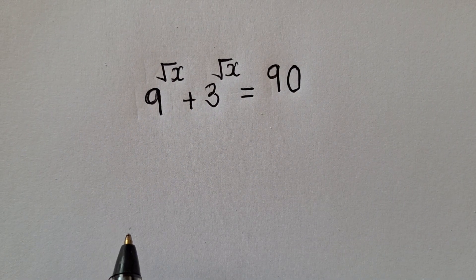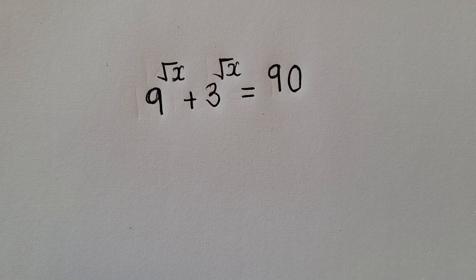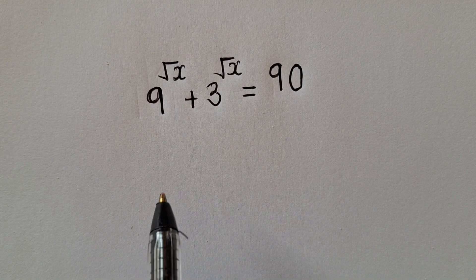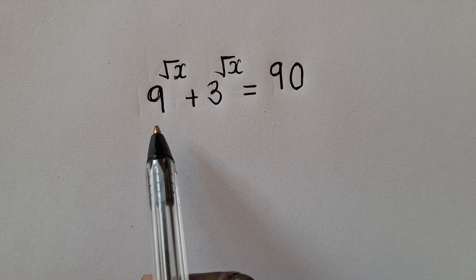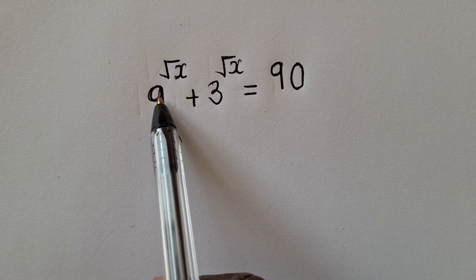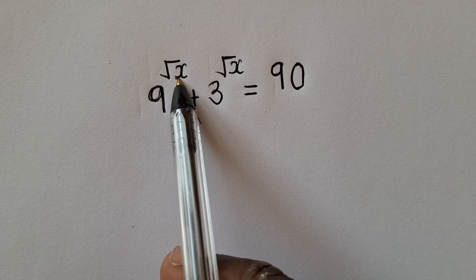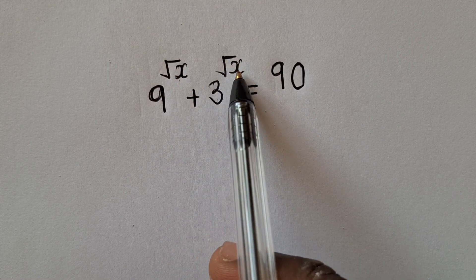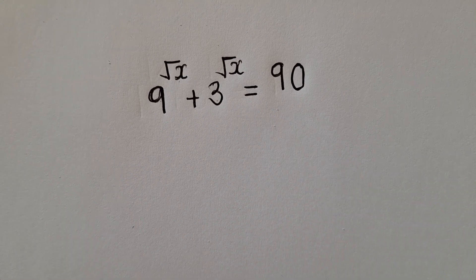Alright, so I've got a question sent to me by one of my subscribers. The question reads: solve for x. 9 power square root of x plus 3 power square root of x is equal to 90.